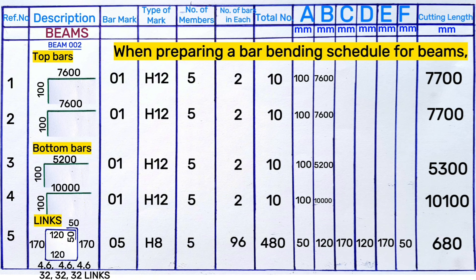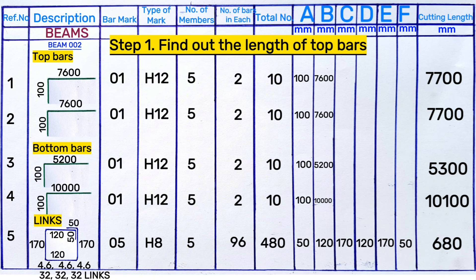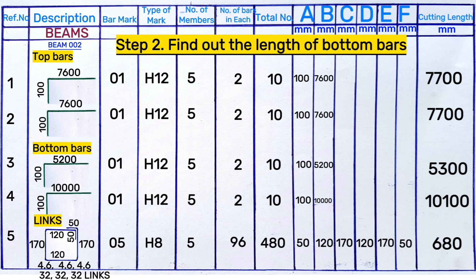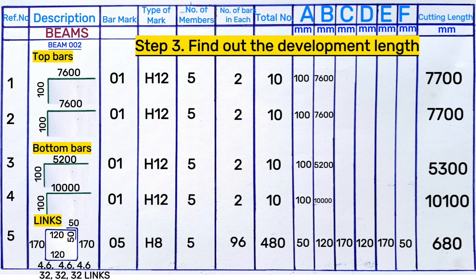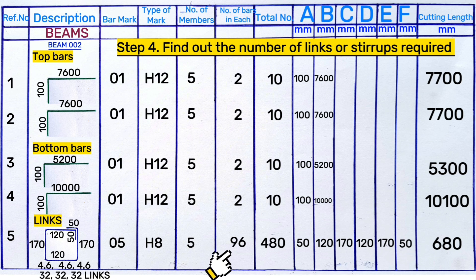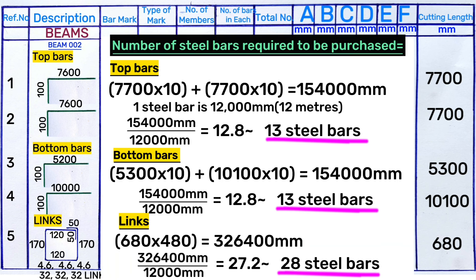In summary, the four steps for preparing a bar bending schedule for beams are: first, find the cutting length for top bars — 7.6 meters each side; second, find the cutting length for bottom bars — 5.2 meters and 10 meters; third, find the development length for steel bars — 100 millimeters; and fourth, find the number of links required. To know the total number of steel bars to purchase, divide the total length by the standard length of one steel bar — 12 meters.